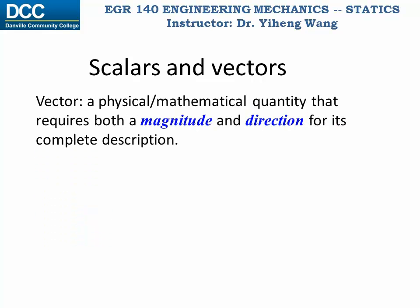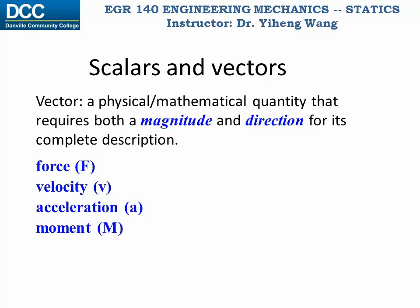A vector, on the other hand, needs to be specified not only by its magnitude, but also by its direction as well. Common physical quantities that are vectors include force, velocity, acceleration, and moment. Note that in print, the vector is normally expressed by bold letters, but in handwritings, we normally write a vector with an arrow on top of the letter.